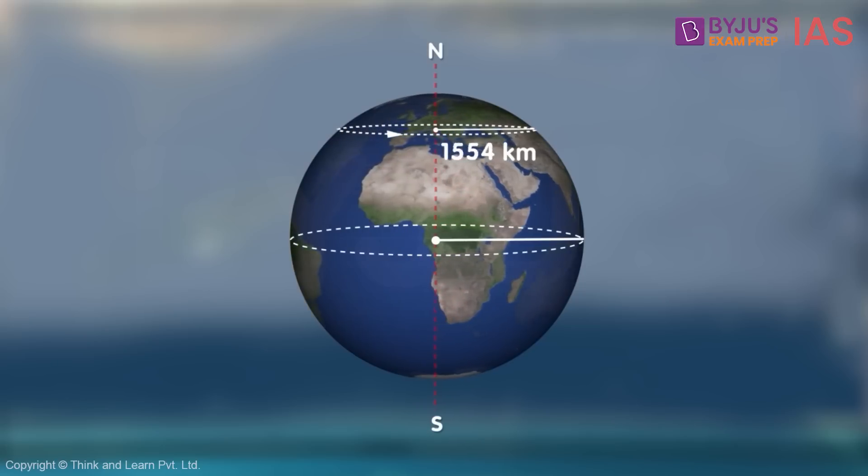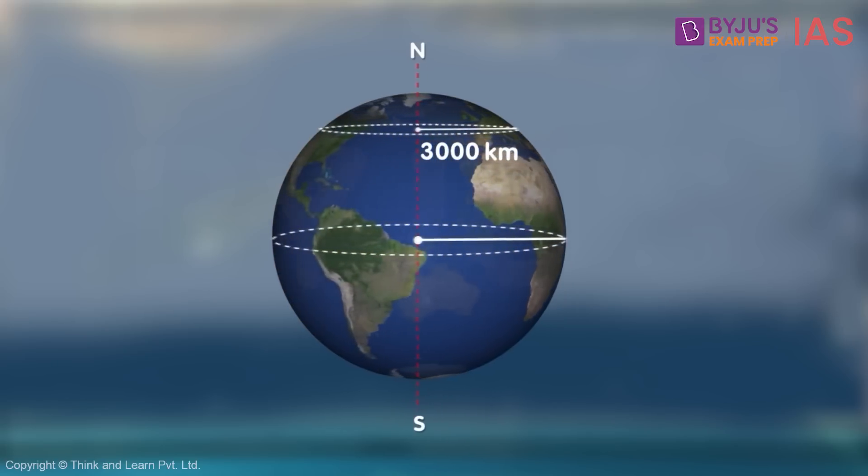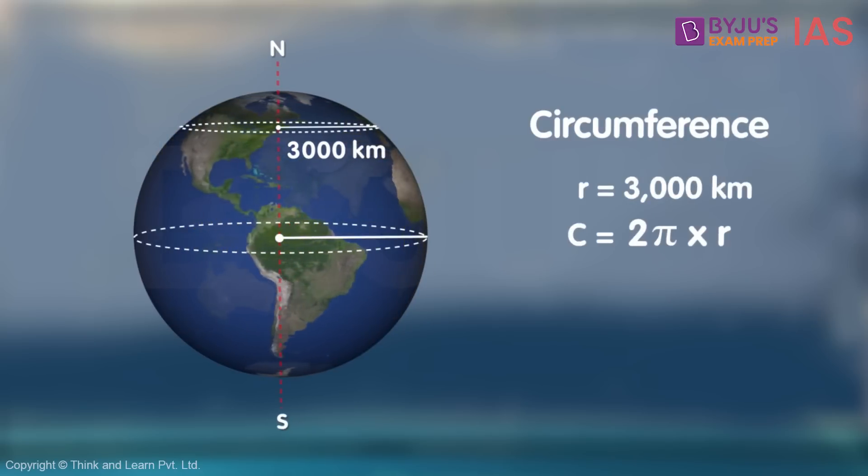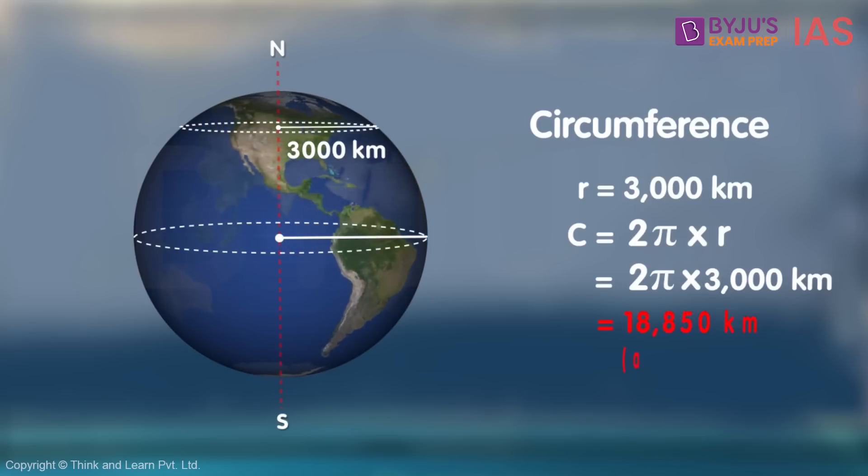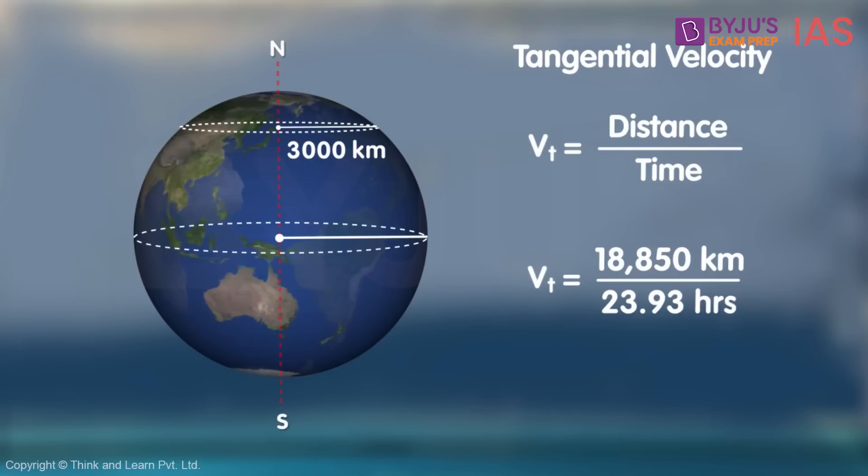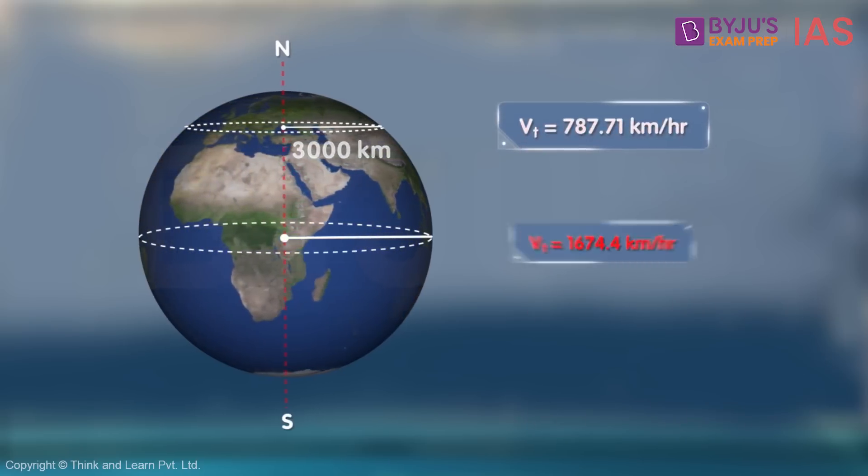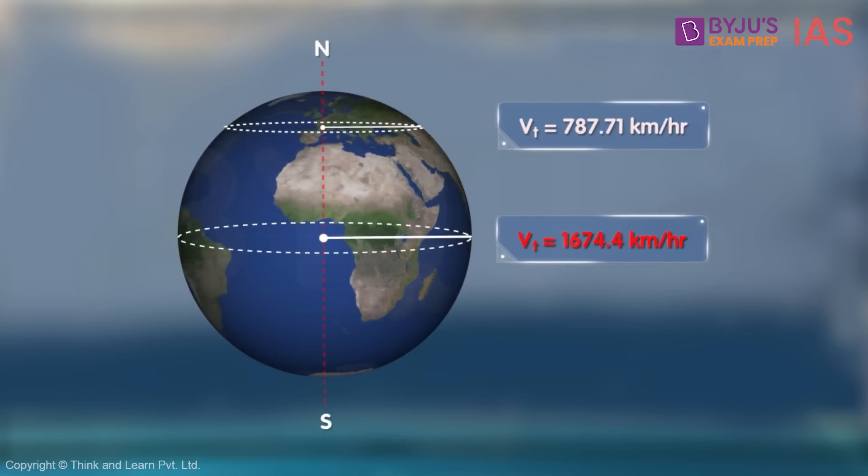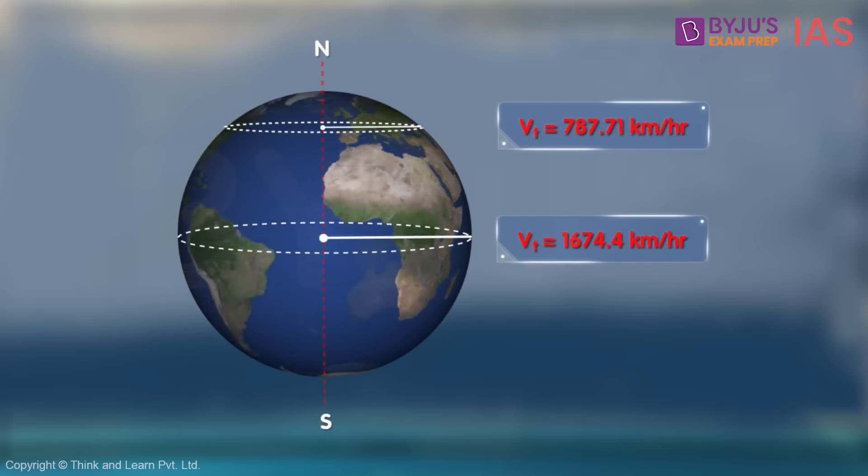Suppose this point is at a distance of 3,000 km from the axis. Therefore, the circumference of this point will be 2 pi into radius that is approximately 18,850 km. So the velocity at this point shall be 18,850 km divided by 23.93 hours which comes out to be 787.71 km per hour. So we observe a clear reduction from 1674.4 km per hour to around 700 km per hour.